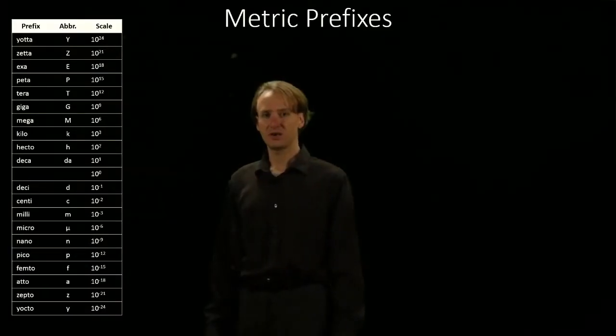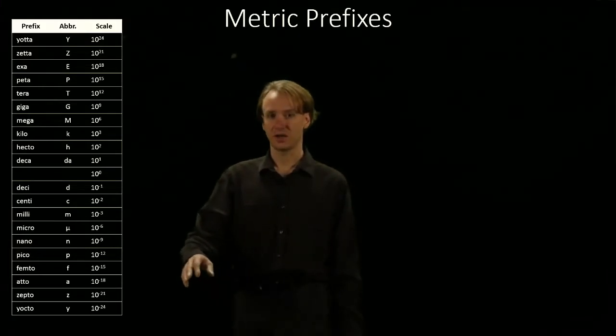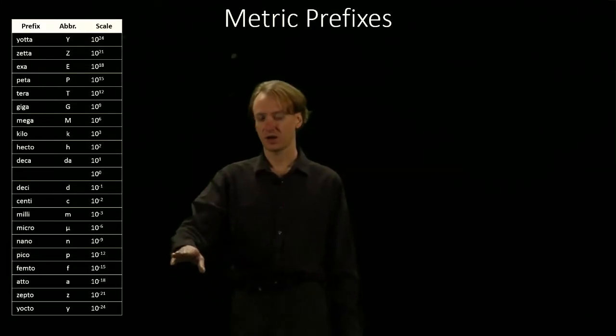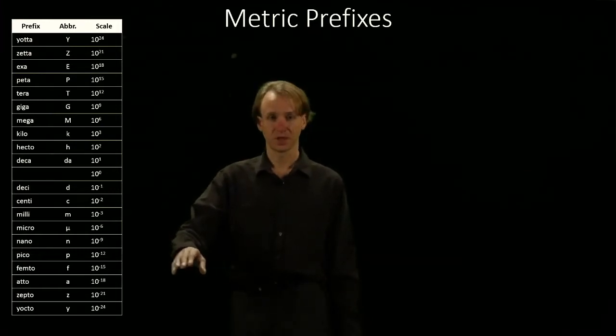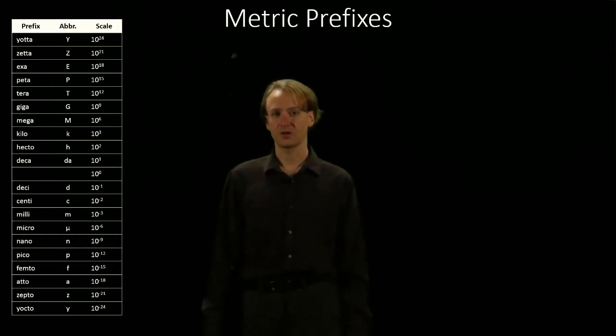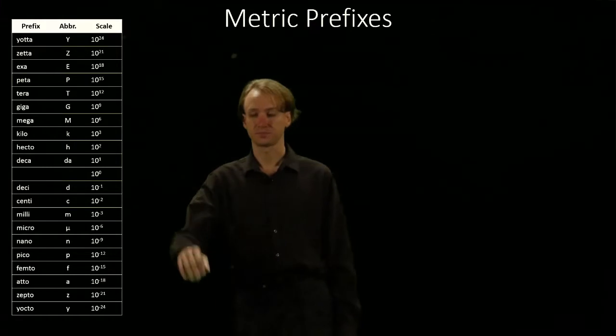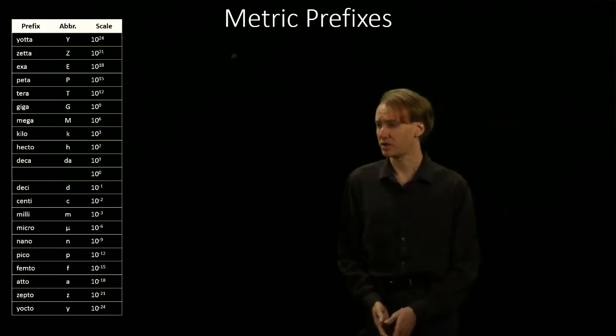On the small side, the diameter of a hydrogen atom is about 110 picometers, and the size of a flu virus is about 100 nanometers. So both of those are very small things.